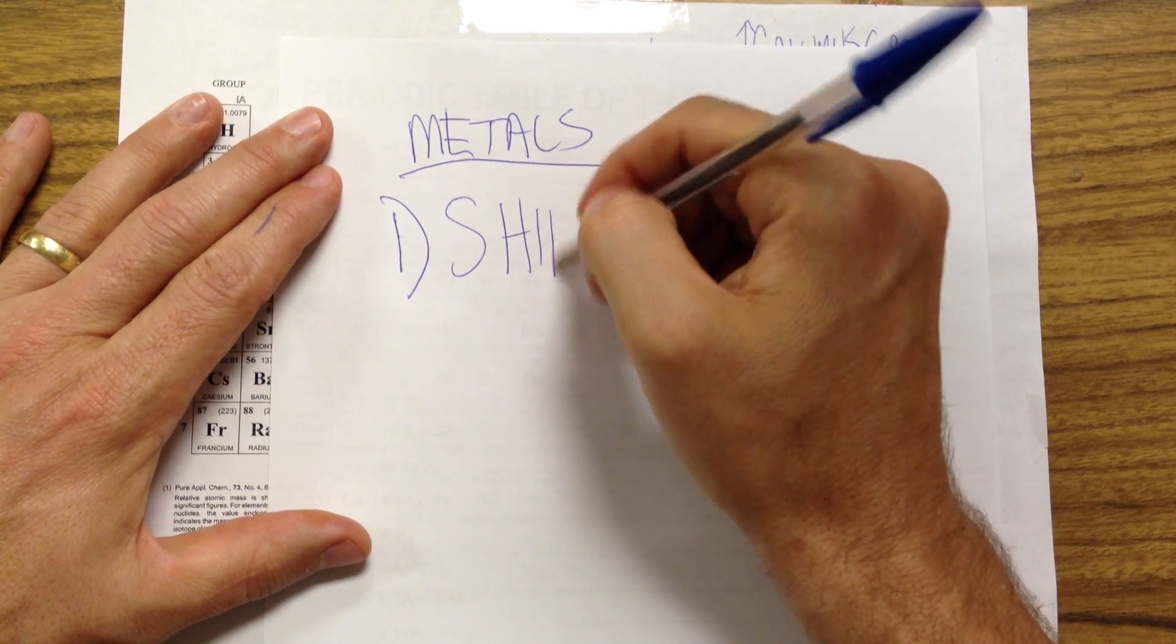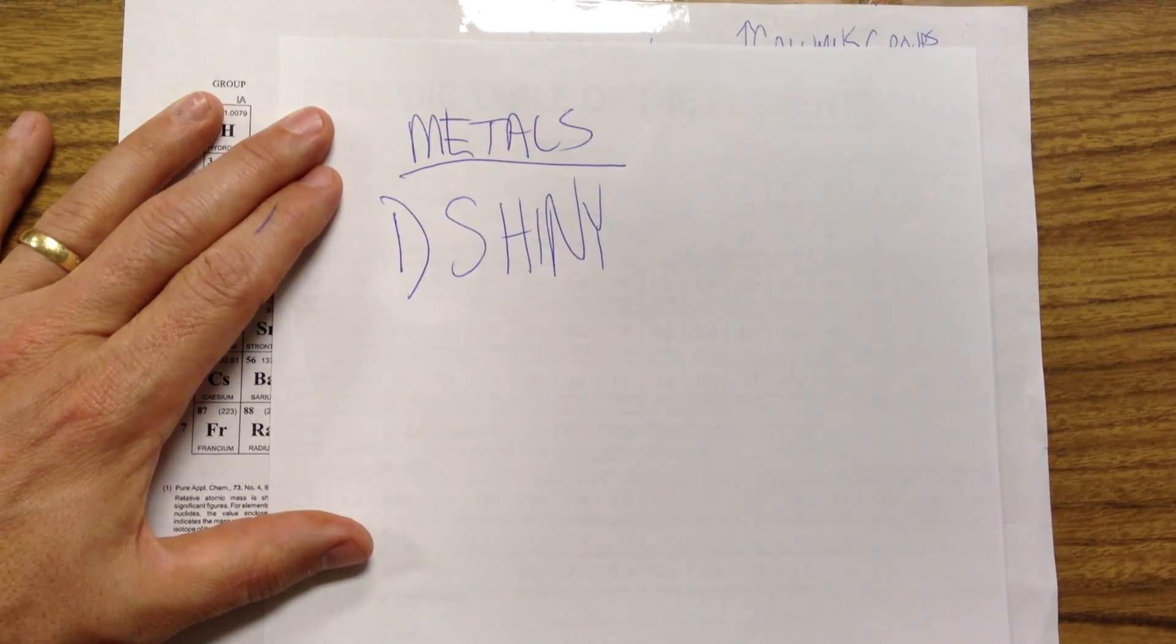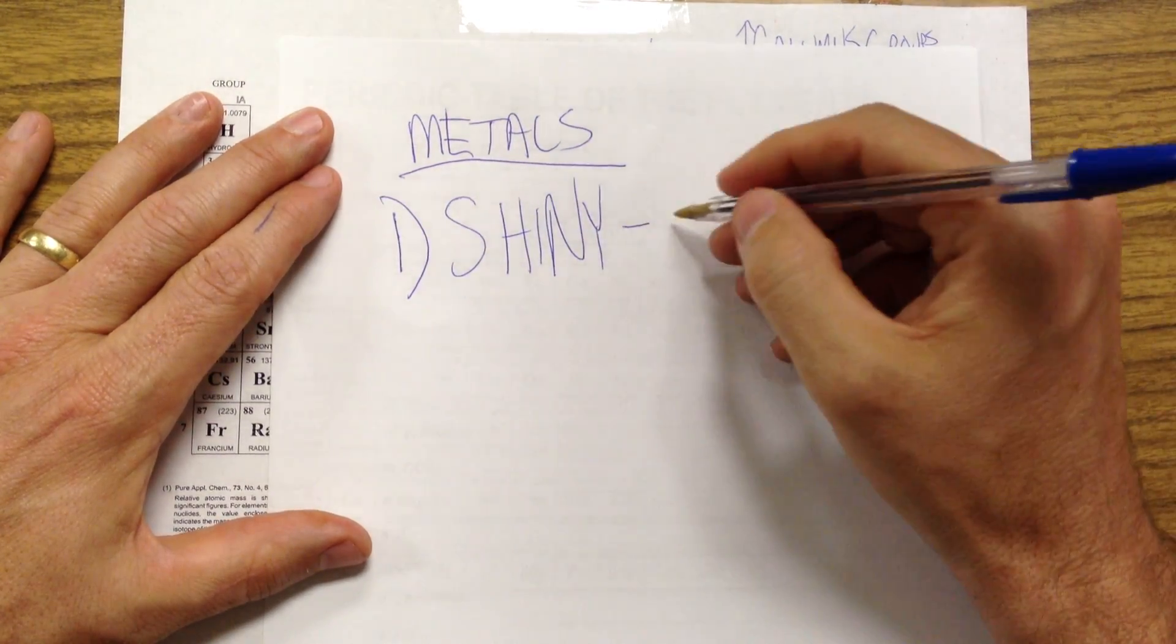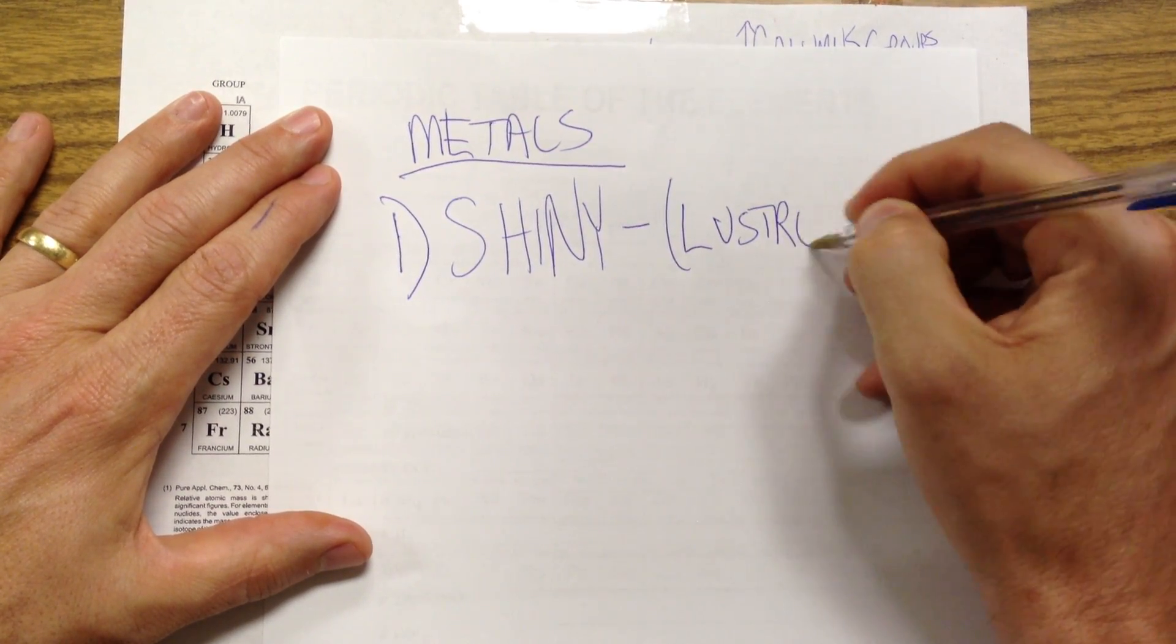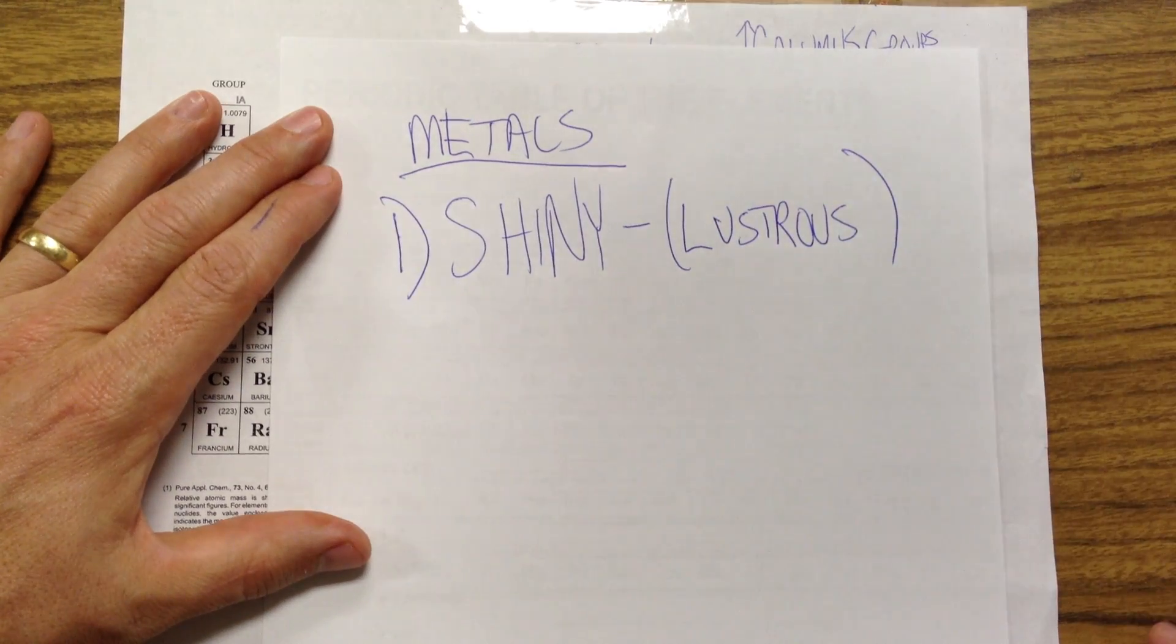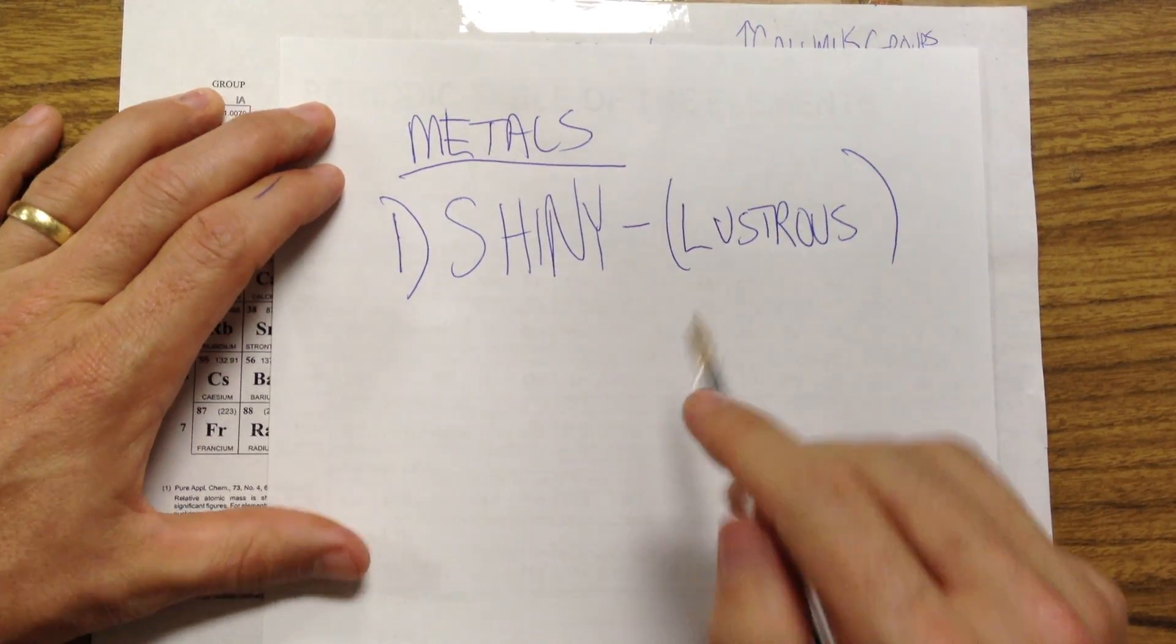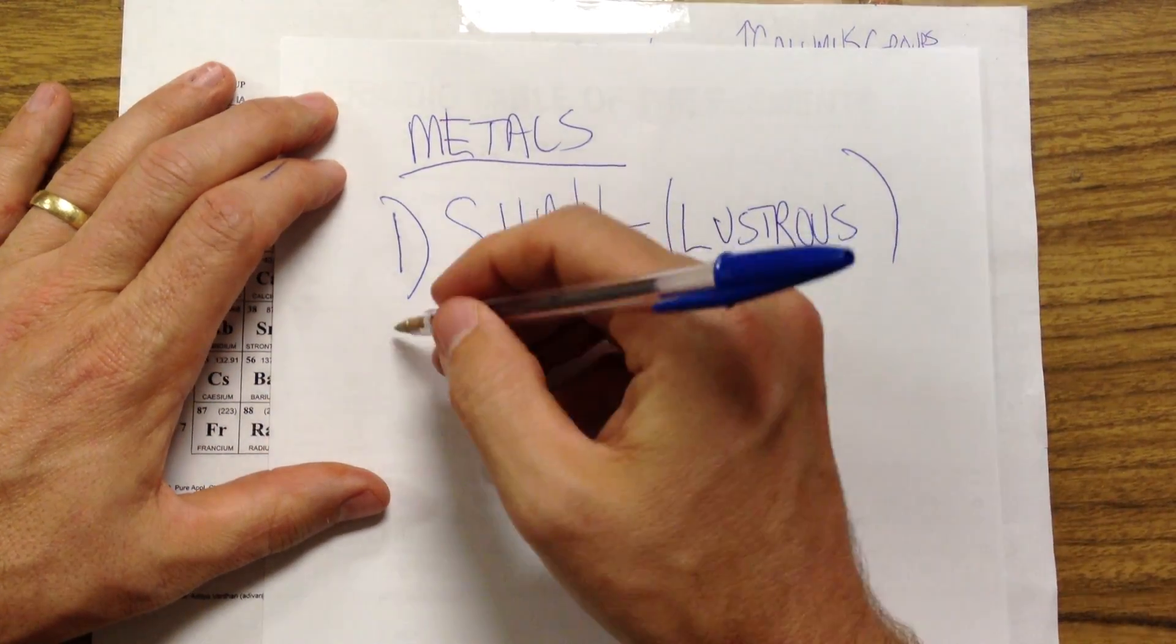We know that if you look at metal and polish it, it's going to look shiny. Scientists like to use words that sound fancy, so we say lustrous instead. If you say something has a luster, you're saying it has a shine.